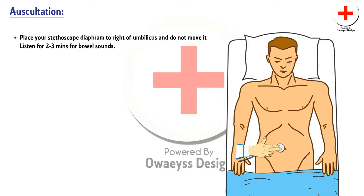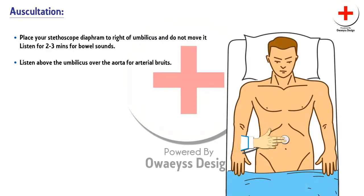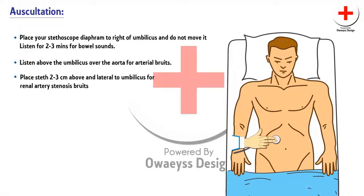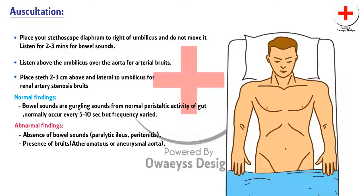Now we move to the last part of our examination: auscultation. Before making contact with the abdomen, make sure the stethoscope is warm. Place the stethoscope's diaphragm to the right of the umbilicus and do not move it. Listen for two to three minutes for bowel sounds. Then listen above the umbilicus over the aorta for arterial bruit. Place the stethoscope two to three centimetres above and lateral to the umbilicus for renal artery stenosis bruit. Normal findings: bowel sounds are gurgling sounds from normal peristaltic activity of the gut, normally occurring every 5 to 10 seconds but with variable frequency. Abnormal findings include absence of bowel sounds, which occurs in paralytic ileus and peritonitis, and the presence of a bruit, which may suggest atheromatous disease or an aortic aneurysm.